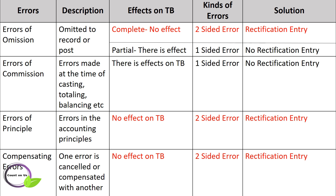Next, errors of commission — errors made in the process of casting, totalling, balancing, etc. For example, posting amount 500 as 50, posting the same amount twice in the account, wrong account, wrong casting, balancing, carry forward, etc. All of these will affect the trial balance as they are all one-sided errors and no rectification entry is required.